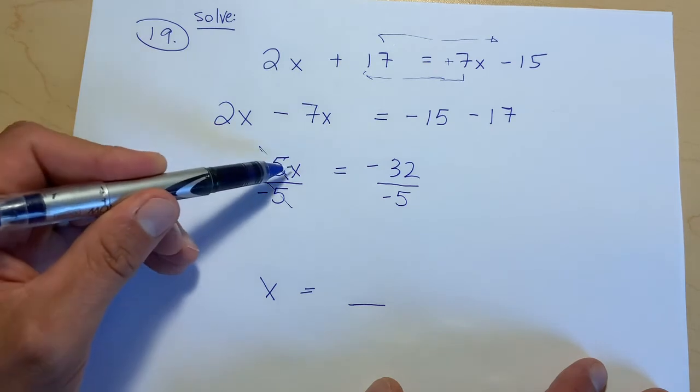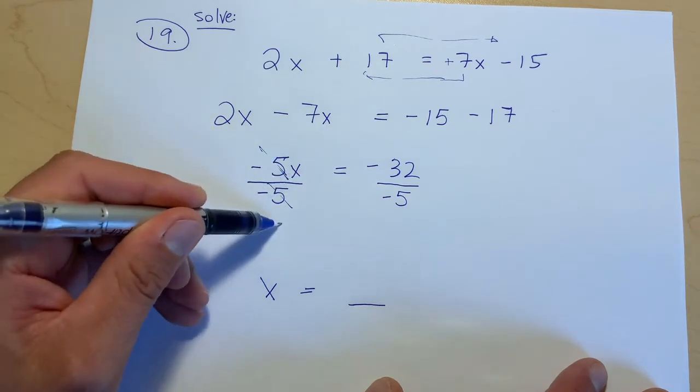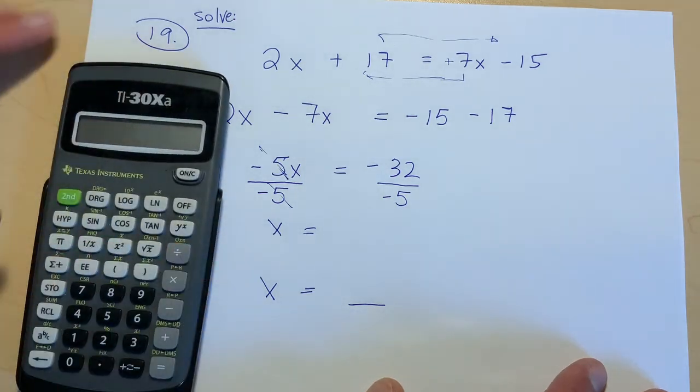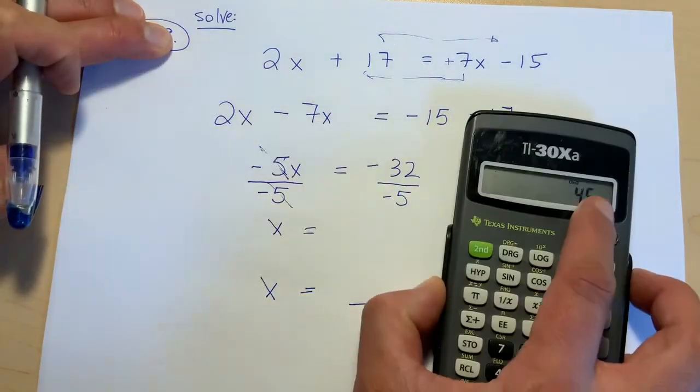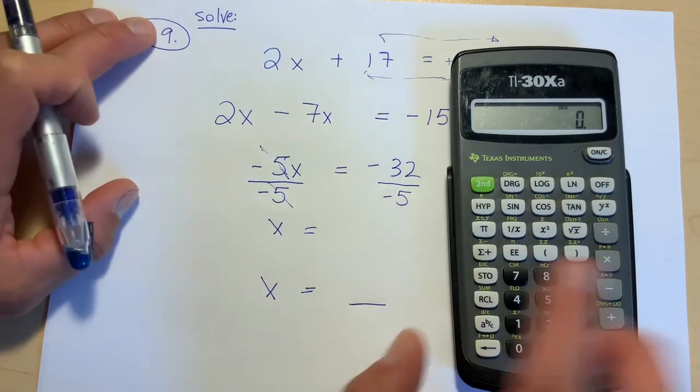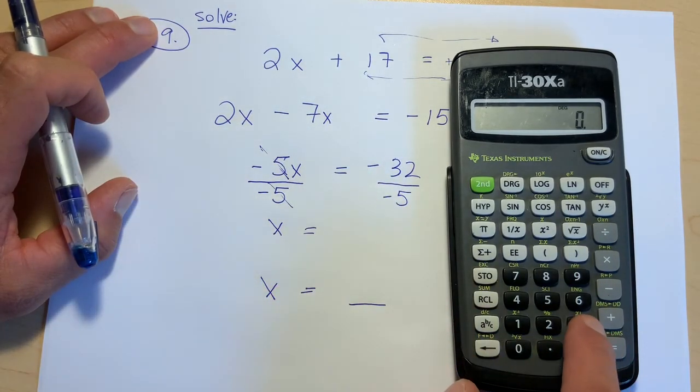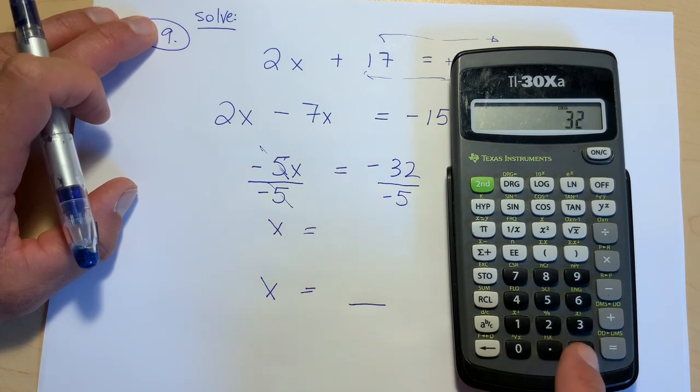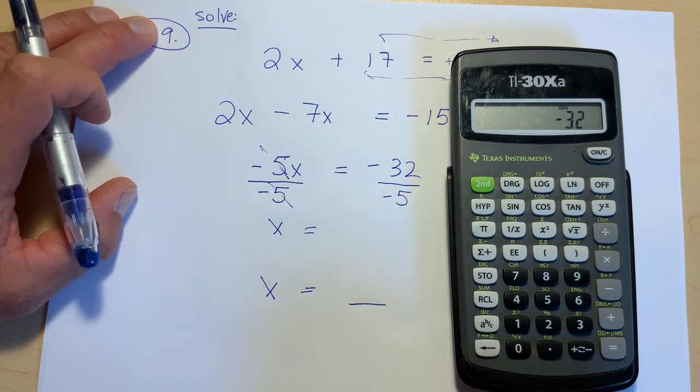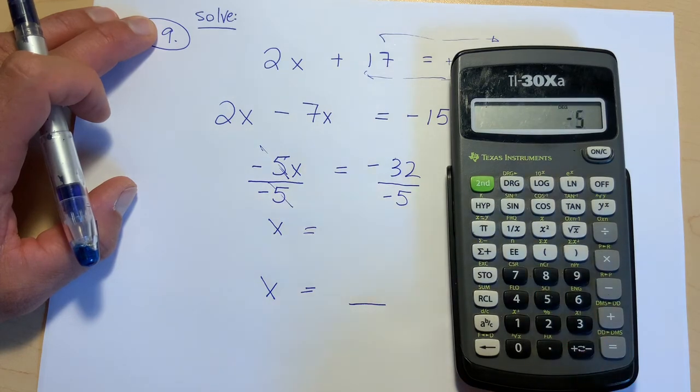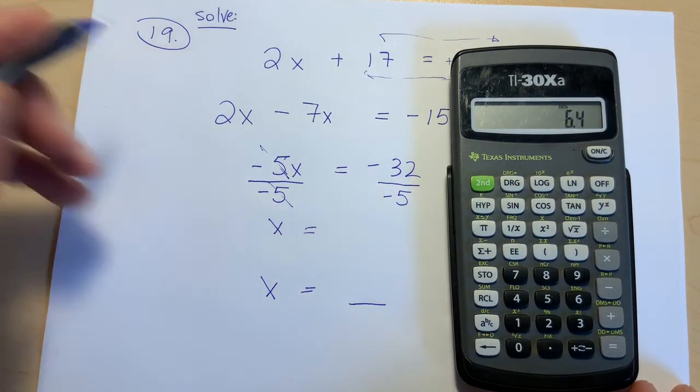So that leaves us with just x on this left side. And then on the right side, I'm going to take my trusty old calculator. Oh boy, trusty old calculator. A negative divided by a negative is going to give us a positive, so I'll put in 32 with the negative button and I'm going to divide by 5 with the negative button, and we get 6.4.